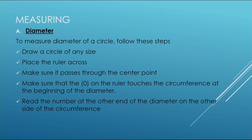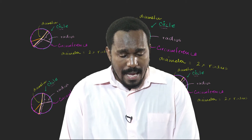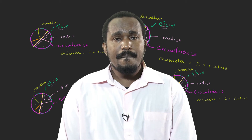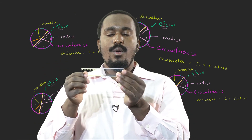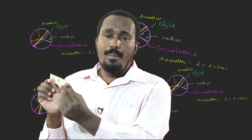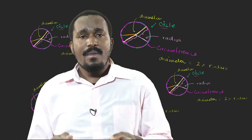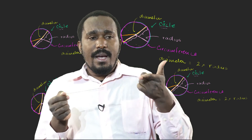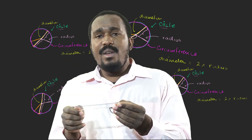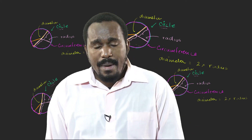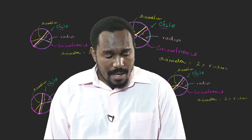You should make sure that for a diameter to qualify as a diameter, it should pass through the center point. Also make sure that the zero on the ruler should sit or lie straight against the outer line of the circumference. Then check where the other end of the diameter is — at what number, at what reading is it? Then you read that number.